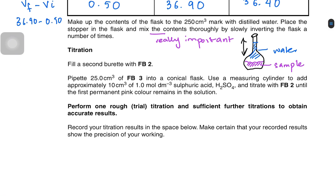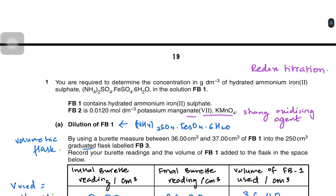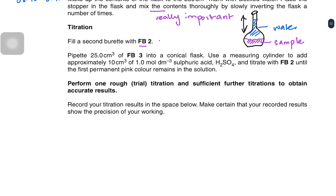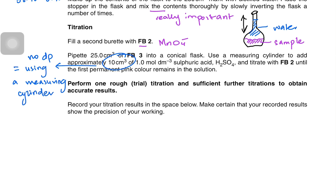For the titration, fill a second burette with FB2 — the potassium manganate solution. Pipette 25.0 cm³ of FB3 into the conical flask. Use a measuring cylinder to add approximately 10 cm³ of 1.0 mol per dm³ sulfuric acid — note there is no decimal place, so a measuring cylinder is appropriate here since accuracy is not critical. The sulfuric acid provides the acidic medium required for redox titrations. Titrate with FB2 until the first permanent pink colour remains.